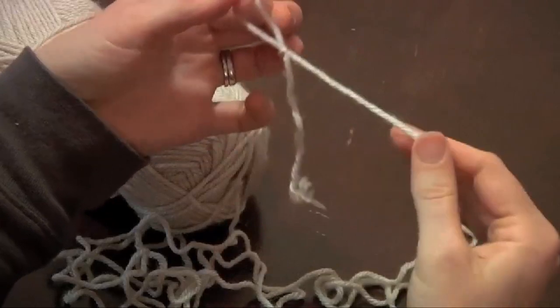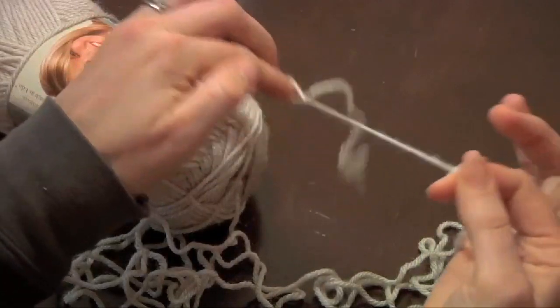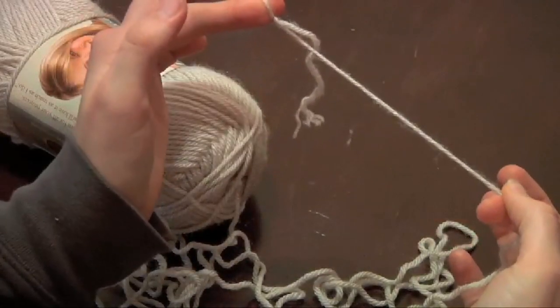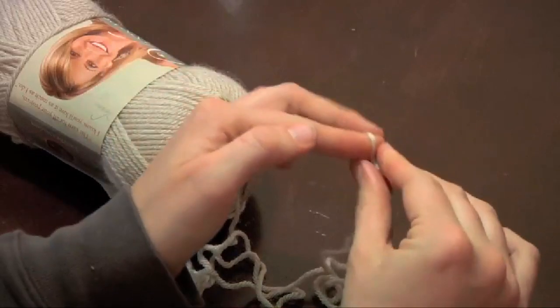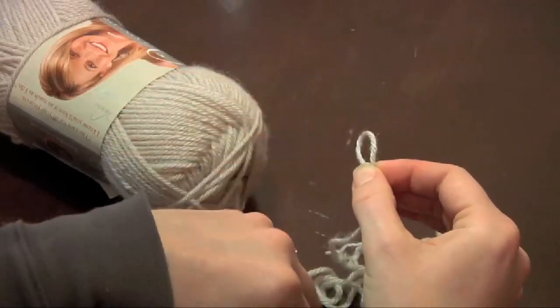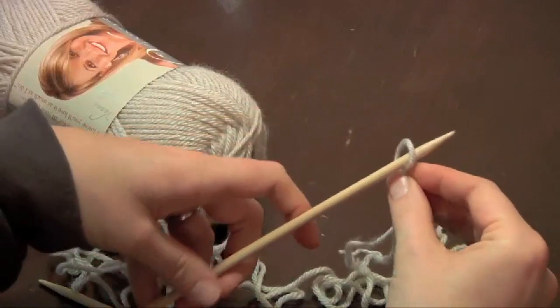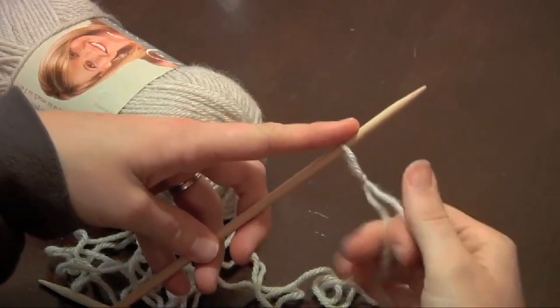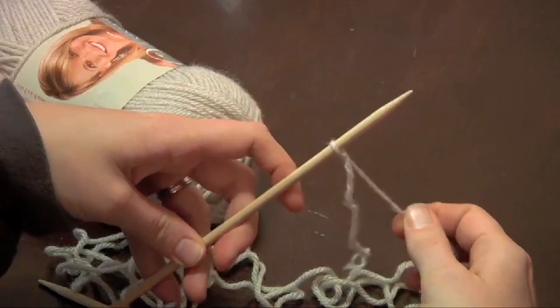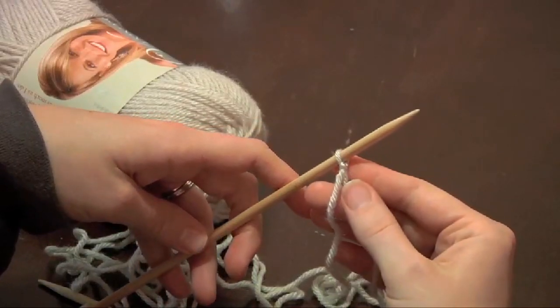That way when you pull that strand tight your loop will tighten. Then what you're going to do is take your first needle, slide it through the loop and pull it tight. Now you're ready to cast on.